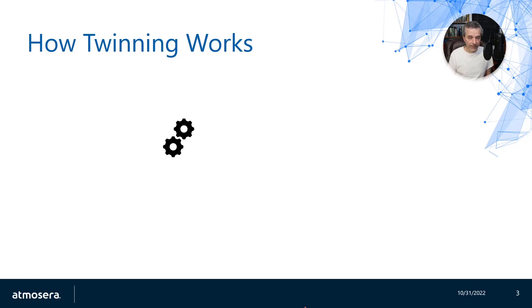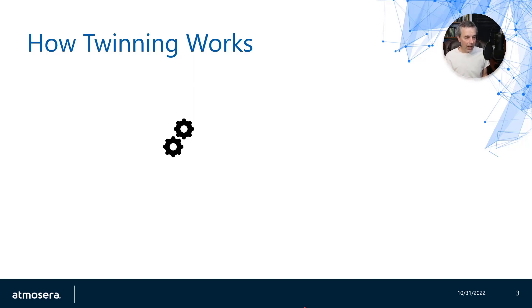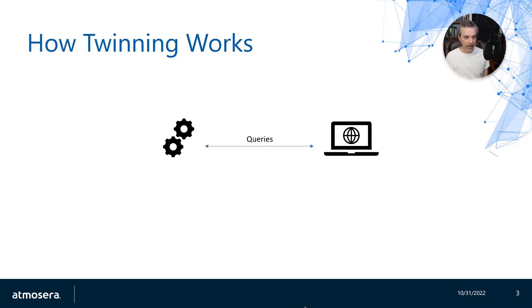Let's talk about why you might want to use twinning in the first place. A device has a lot of different kinds of data associated with it. It has the data that it sends, which is typically called telemetry — that's not really what we do with twinning — but it also has configuration data and state data. If I wanted to get that data, I would query the device: a client asks the device to send its latest configuration or state data, and the device sends that back.